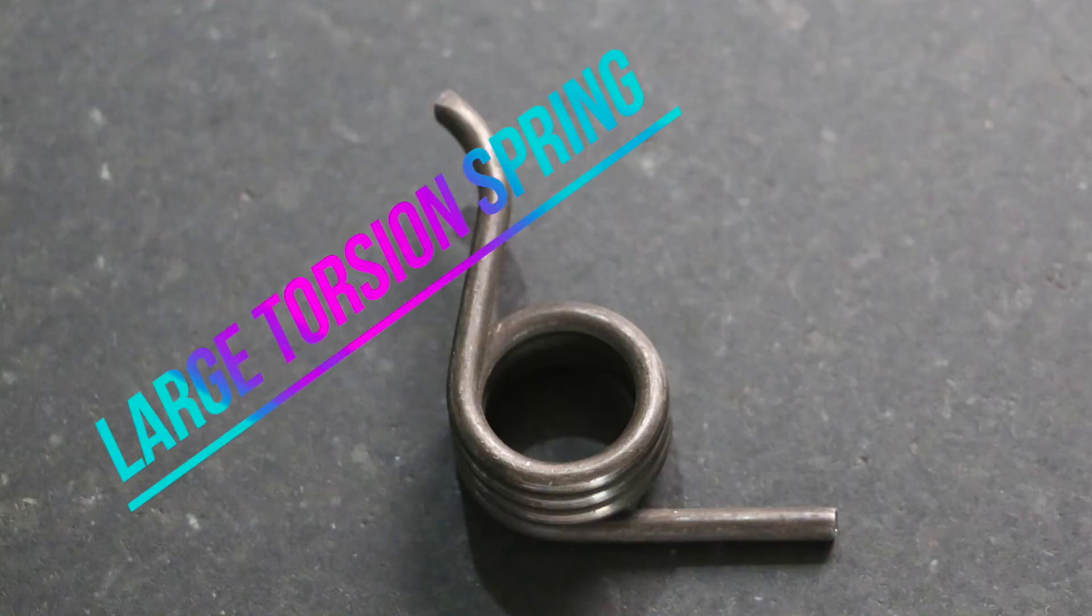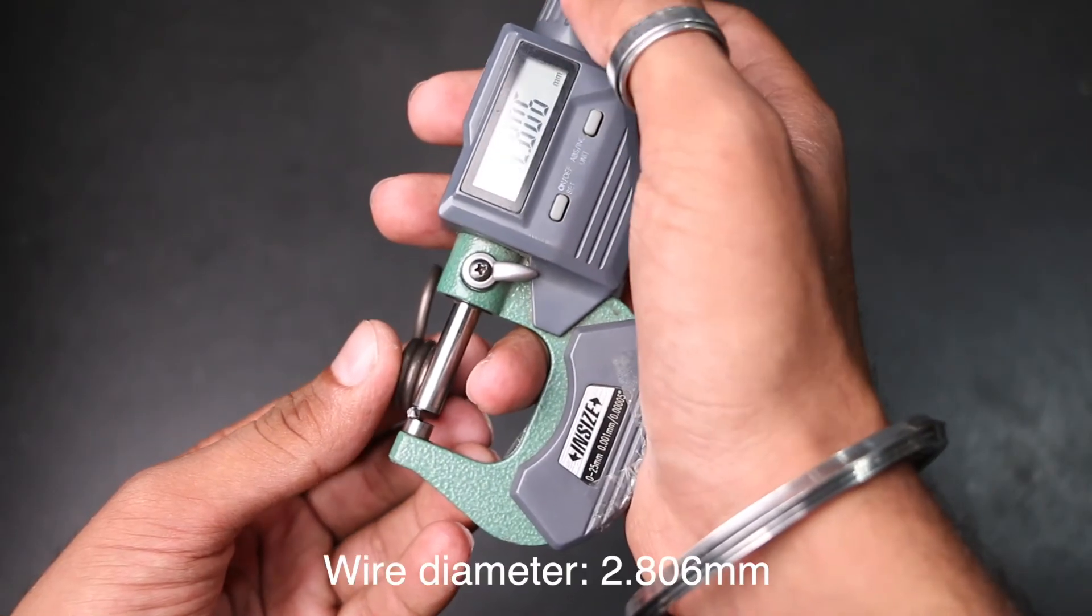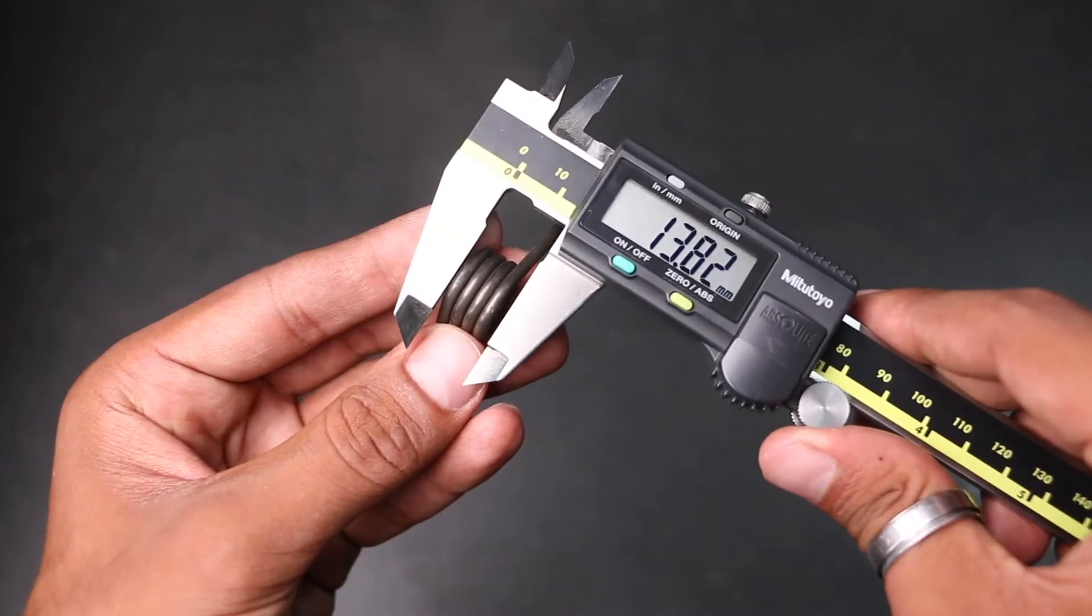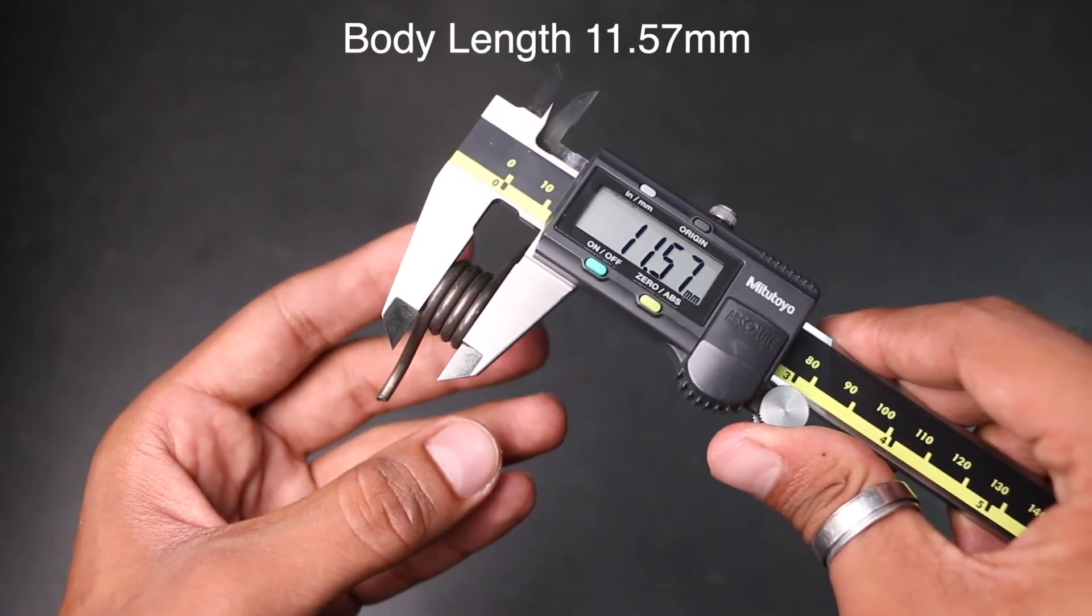Now in case of large torsion spring, wire diameter is 2.806 millimeters. OD is 18.56 millimeters. Body length is 11.57 millimeters.